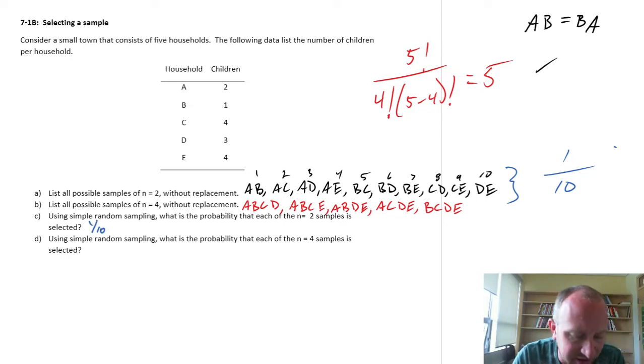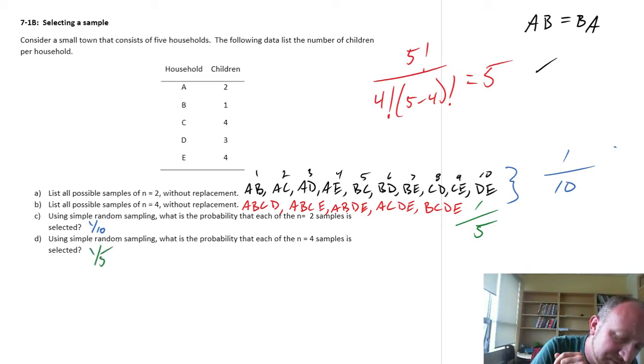For part D: Using simple random sampling, what's the probability that each of the n equals 4 samples is selected? We have 5 possible samples of size 4 from the population of size 5, and they all have equal probability. So the probability is 1/5 for each of those 5 samples of size 4.